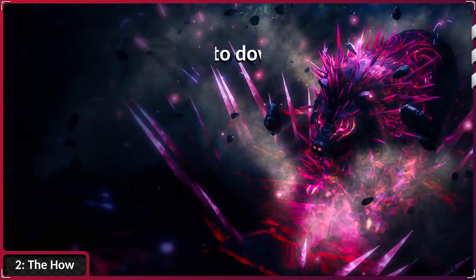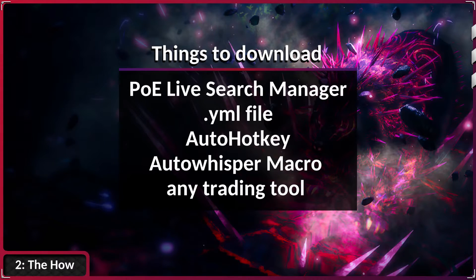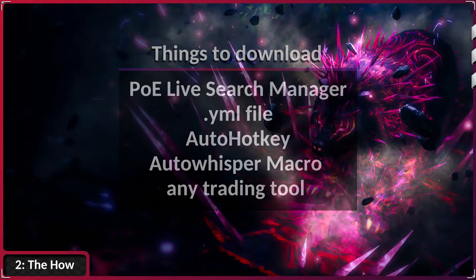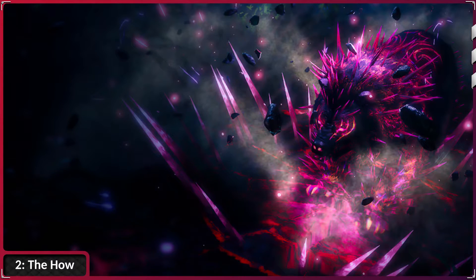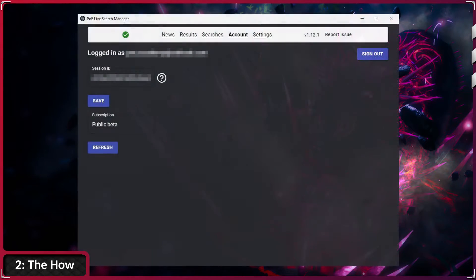Since it takes some effort to get everything up and running, I want to talk you through all the necessary steps to set up this method. First, go to the websites in the description below this video to download the PoE Live Search Manager, the example YML file, AutoHotKey, the AutoWhisper macro for AutoHotKey, and any trading tool of your preference. I personally prefer Mercury Trade, but that's completely up to you. Then go ahead and install every single piece of software. Once everything is installed, you have to put in your Session ID into the Live Search Manager under the Account tab. Hit the big question mark if you don't know how to find this ID — there is a detailed guide on GitHub showing you how to retrieve it.